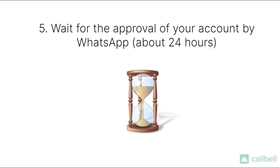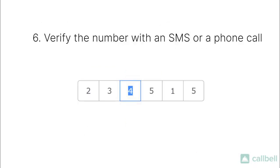Once the request is sent over, we will wait about 24 hours for WhatsApp approval. Once we receive it, we will get in touch with you in order to plan when to send via SMS or phone call the 6-digit code you will need to share with us in order to conclude the configuration of your WhatsApp Business API account.